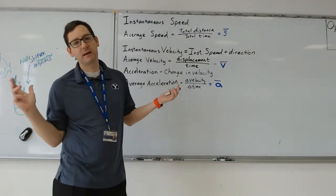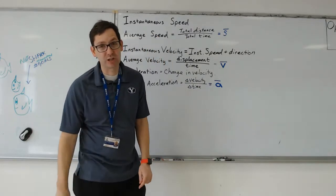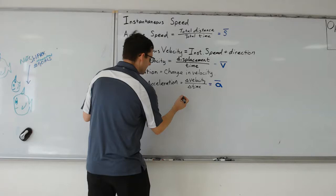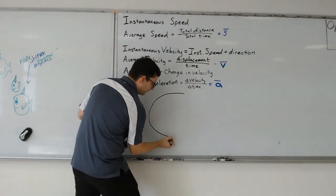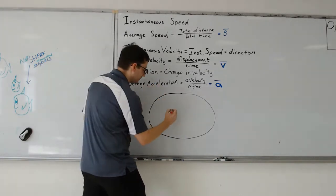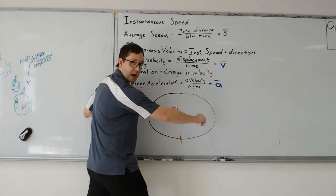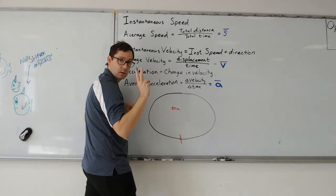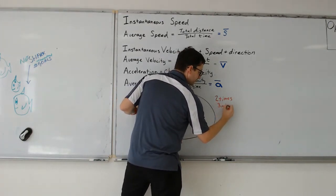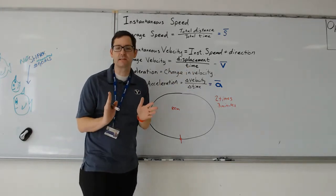Now I promised an example. My favorite is looking at a track — I really don't like running around a track because I get bored easily. A normal track is about 400 meters. So let's say we start at the starting line and run all the way around the track two times, and that takes us three minutes. We're going to assume constant speed, so instantaneous speed and average speed should be the same.